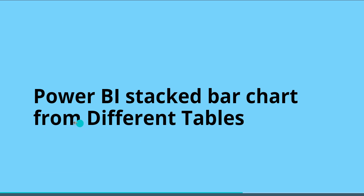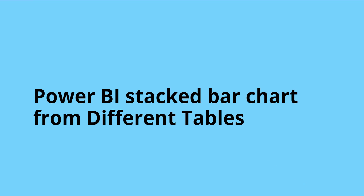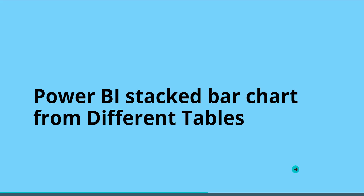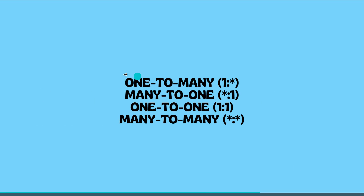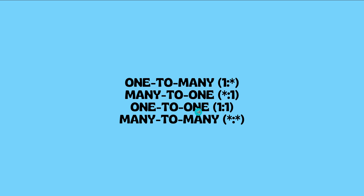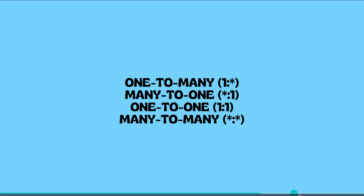Before we begin, we should know about the cardinality process to get data from two different tables. There are basically four different cardinality types available: one-to-many, many-to-one, one-to-one, and many-to-many. These are the four different cardinality relationships that are presented.